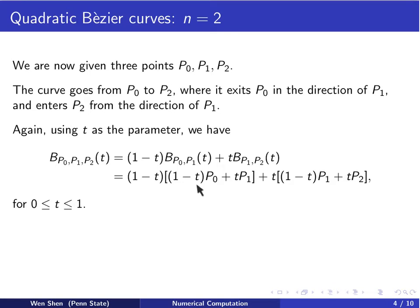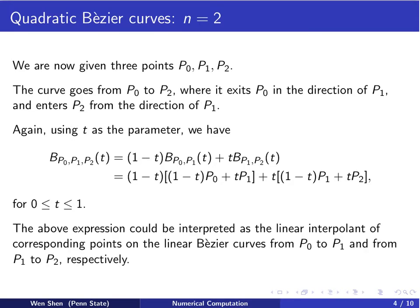In the end, we get a polynomial of degree 2 in t. This expression can be interpreted as the linear interpolant of corresponding points on the linear Bézier curves from P0 to P1 and P1 to P2.